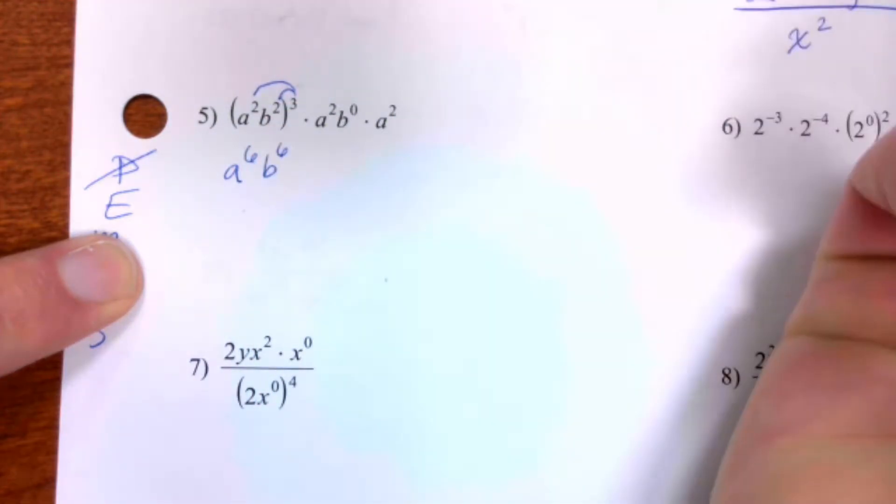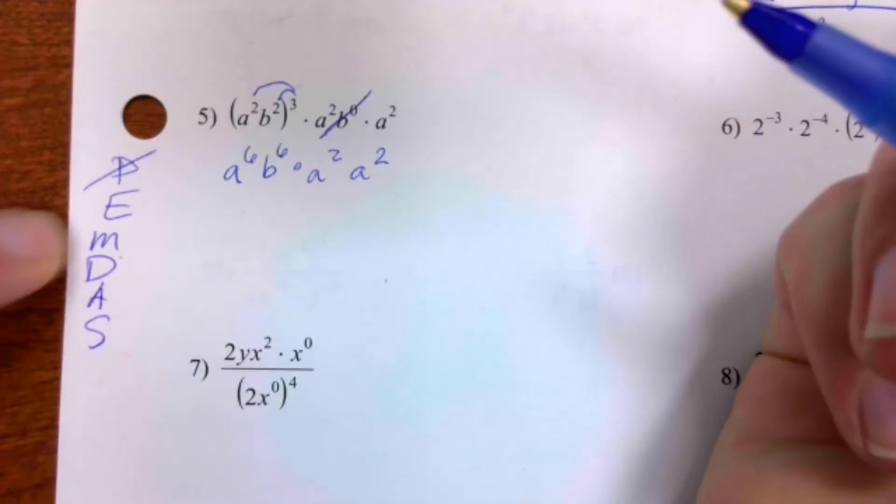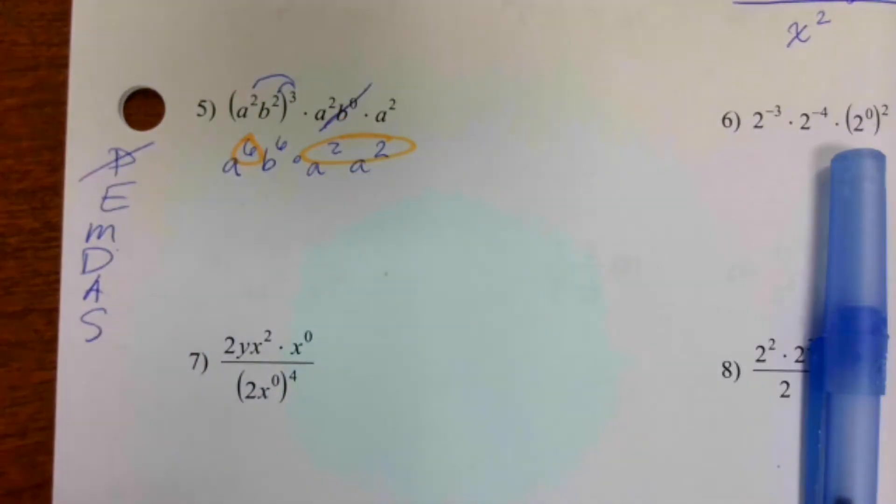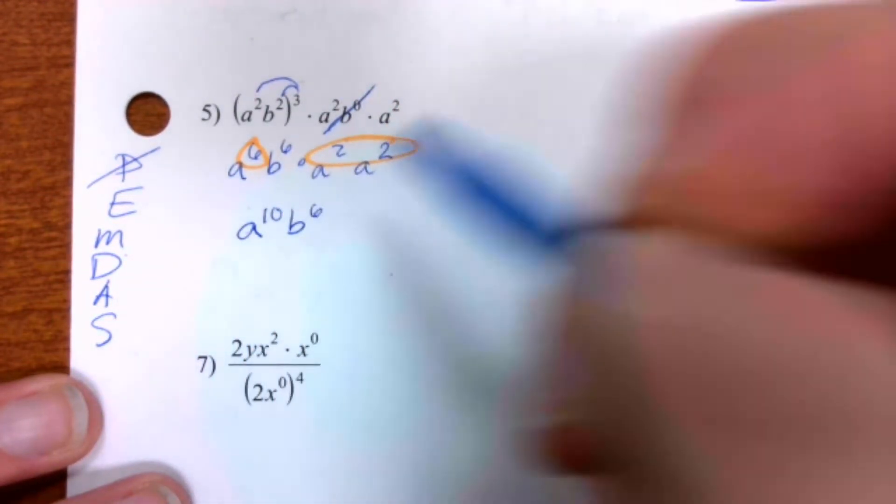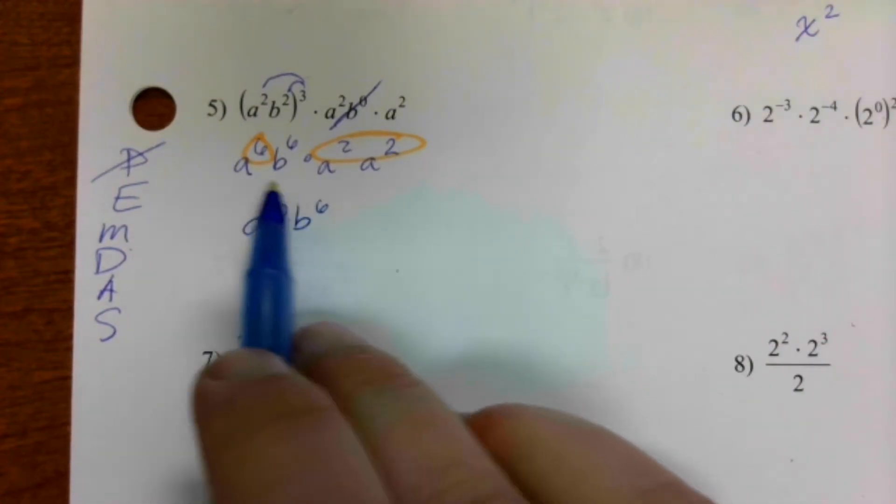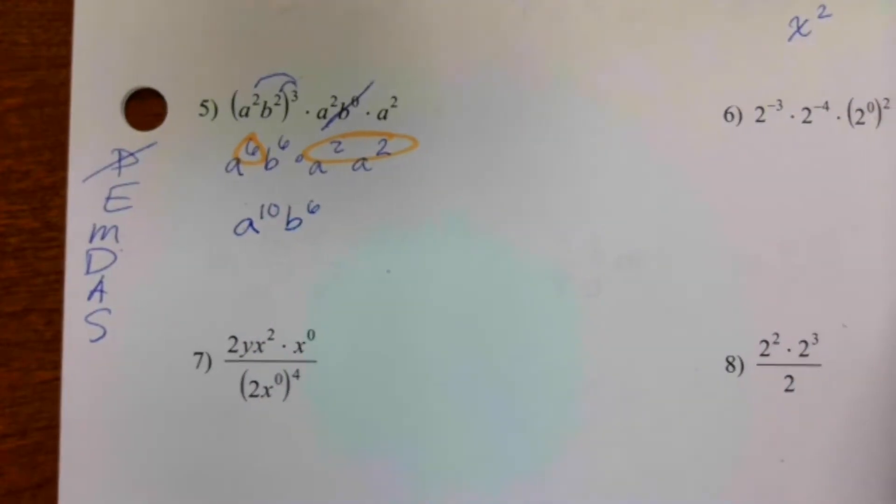The next thing I'm going to deal with is the exponents. So this power, I'm going to go ahead and multiply through: a to the sixth, b to the sixth. Everything else I'm going to bring down, except for I'm not going to bother with the zero one. And now I'm just going to put together all the a's, so I've got six and two twos, that's ten. And I'm done. I know I'm done when I have only one group of every letter. So I don't have a's in multiple places, I just have one group of all the a's, I have one group of all the b's, and I'm done.